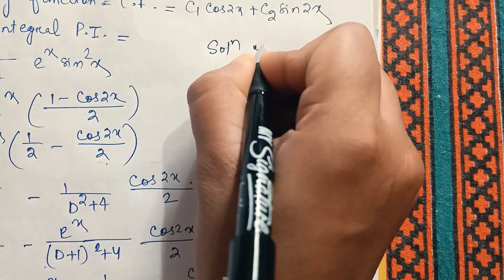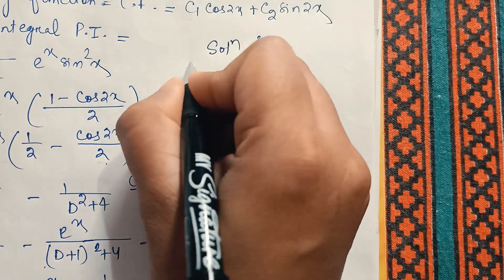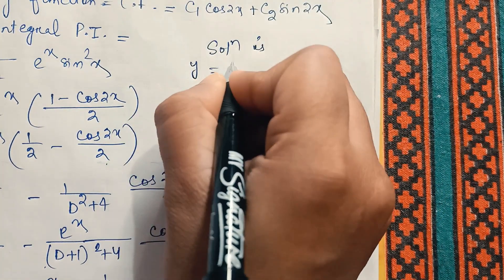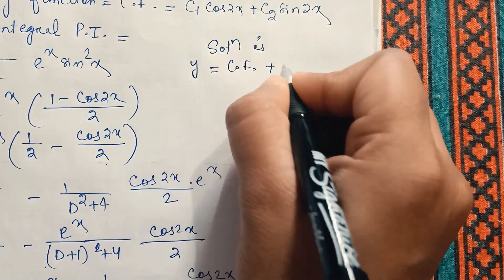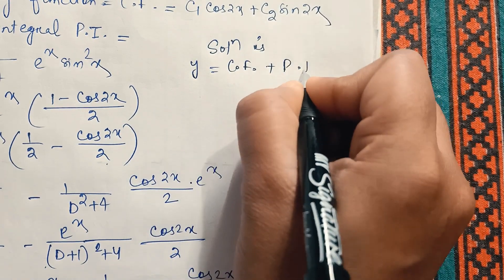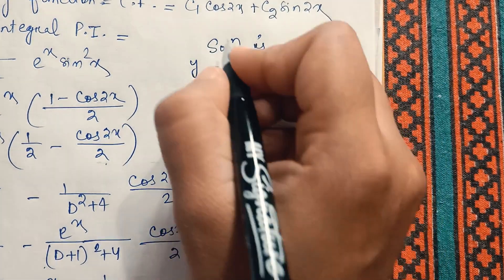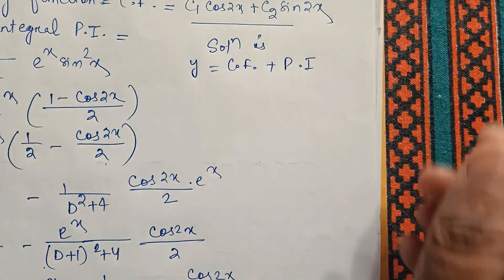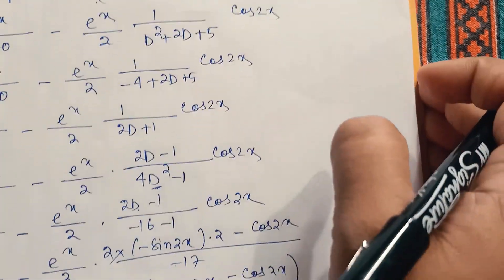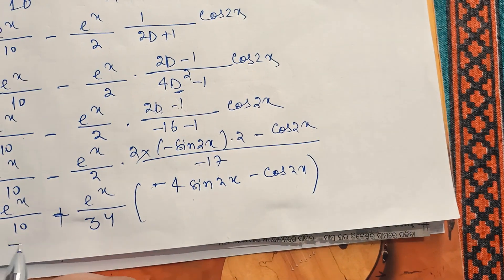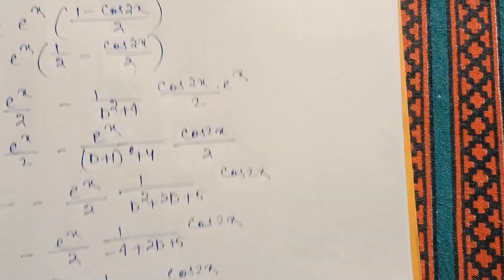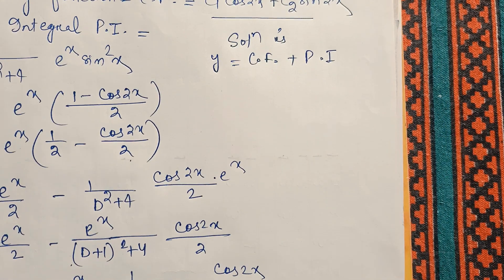This is our PI and this is our CF. The general solution is y = CF + PI, that is y = c₁cos2x + c₂sin2x plus the particular integral computed above. We can add them together to find the complete solution.